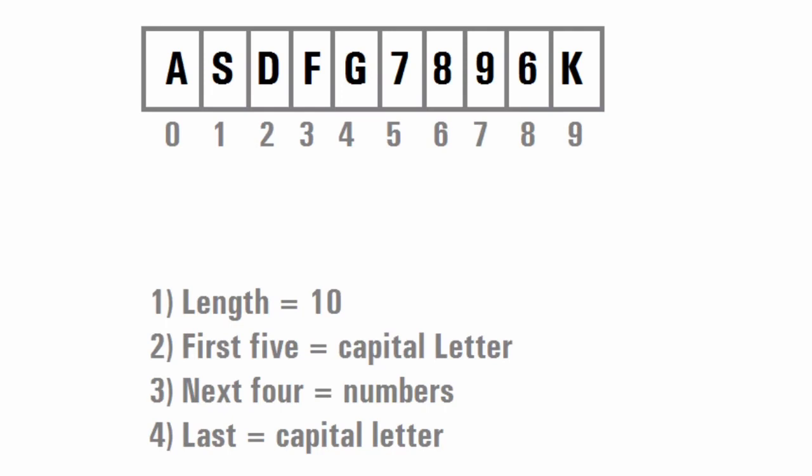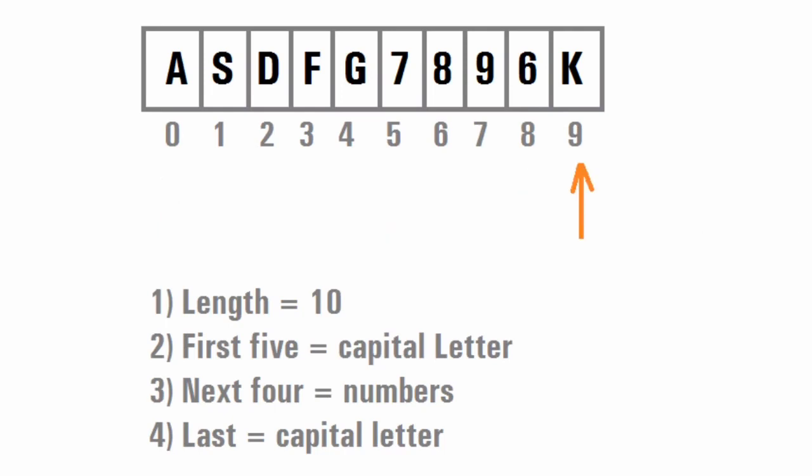In this problem you have four conditions. First, the length of the PAN number string should be exactly equal to 10. Second, the first five characters — from index 0 to index 4 — should all be capital letters. Third, the next four elements from index 5 to index 8 should all be numbers. Fourth, the last character must be a capital letter. If all four conditions match, it is a valid PAN number.